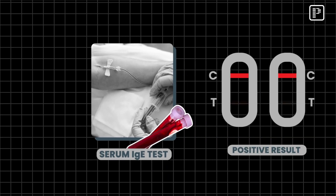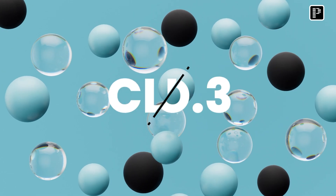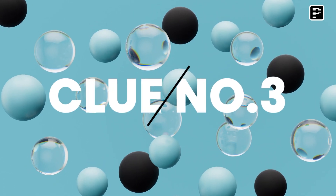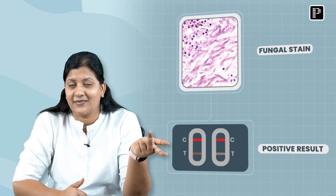Clue number two: serum IgE is positive. Clue number three: these patients typically will have the fungal stain also positive.